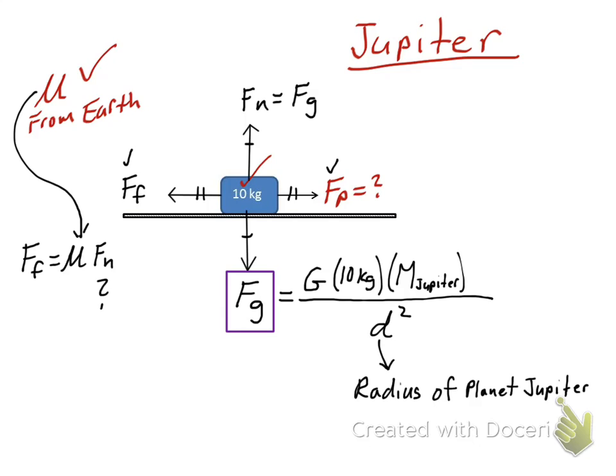Mass in kilograms, distance in meters, not kilometers. I can find my weight. My weight's going to be in equilibrium to my force normal. I can multiply that from my mu that I calculated for my Earth scenario, and I have force of friction, which must be in equilibrium with the force applied.